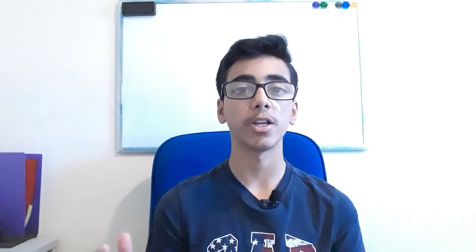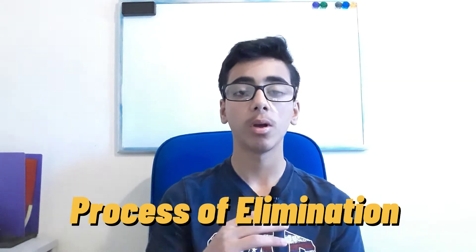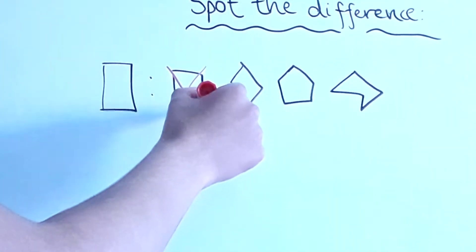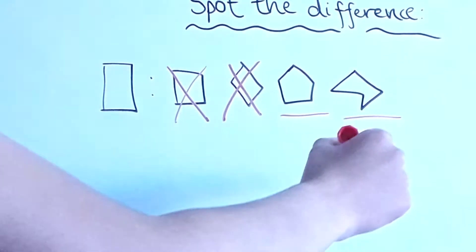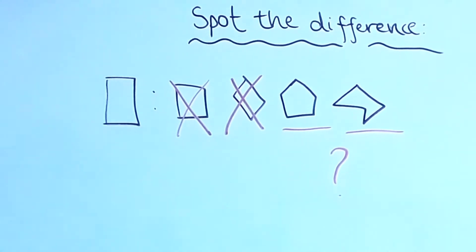Strategy number one is to use a process of elimination. You've probably heard this many times, but it really helps. You'll have lots of options to choose from, but if you eliminate the ones that are clearly different and definitely not the answer, it relaxes you, leaves fewer options, and boosts your confidence. It also prevents silly mistakes, since most answer options will be quite similar.